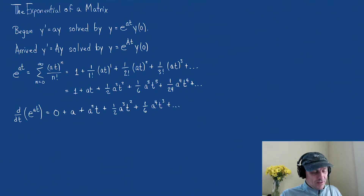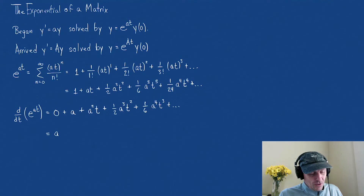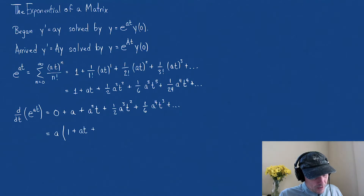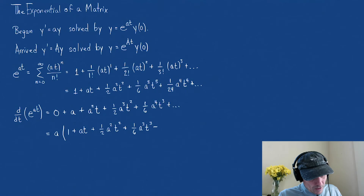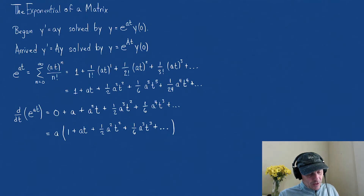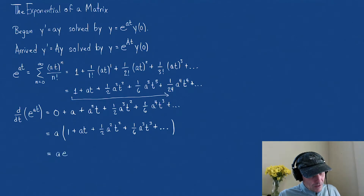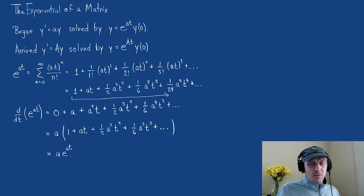This is a bit messy at first, so let's factor out a. We notice the 0 term is gone, but this series goes forever so there's no lack of terms or pattern. Factoring out a, we get a times the quantity 1 plus a t plus one-half a squared t squared plus one-sixth a cubed t cubed plus dot dot dot — and all of that is just e to the a t. So the derivative of e to the a t is a times e to the a t, just as we would expect.